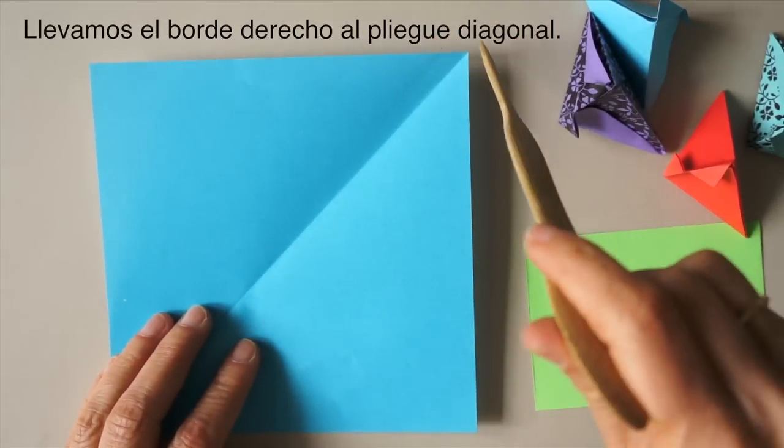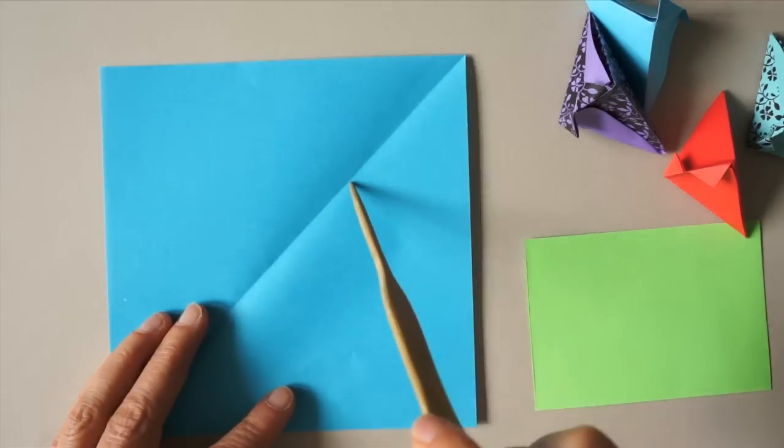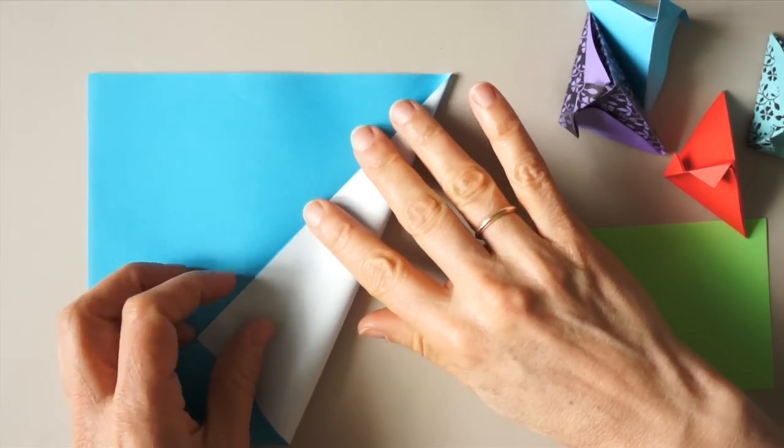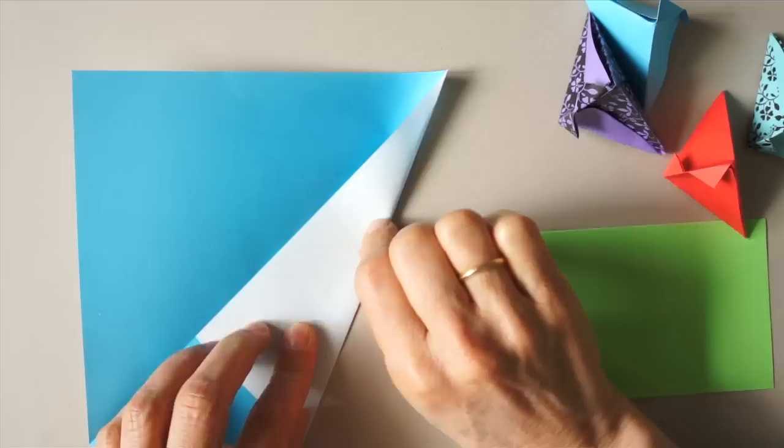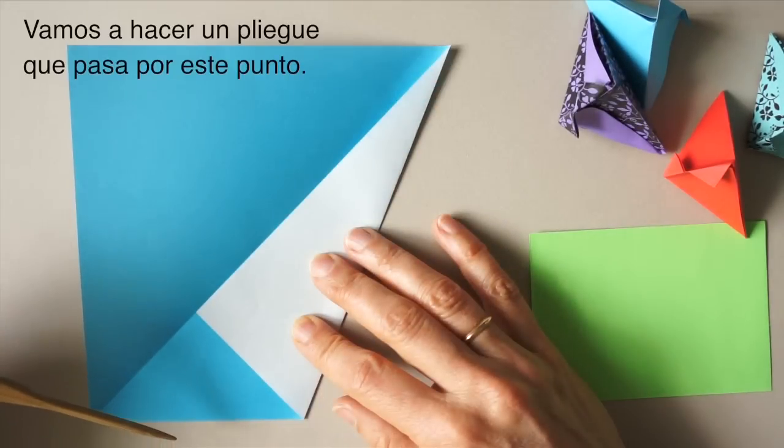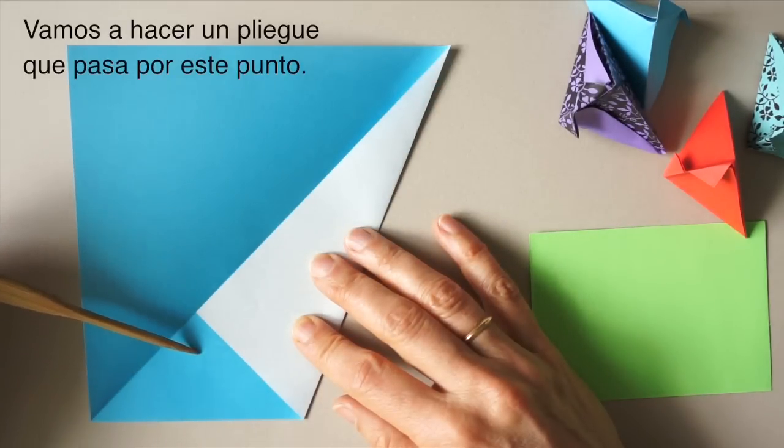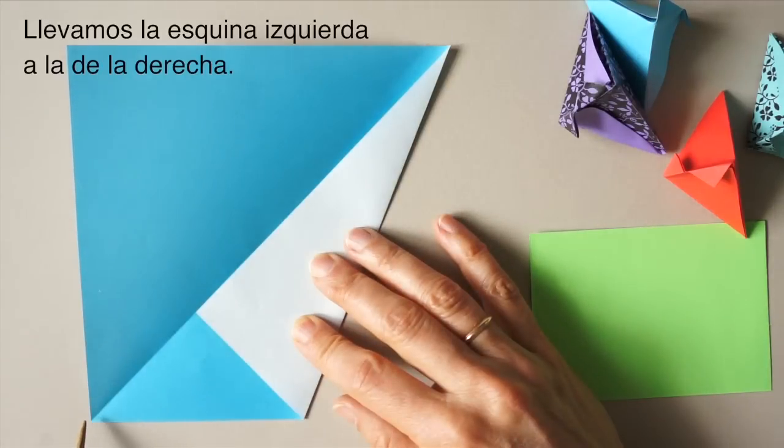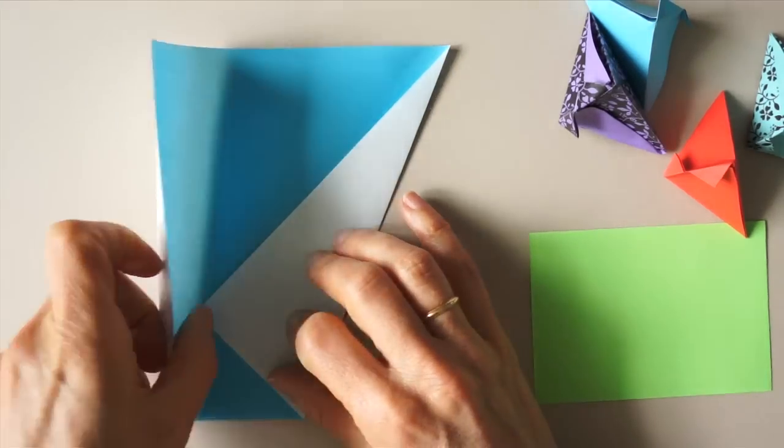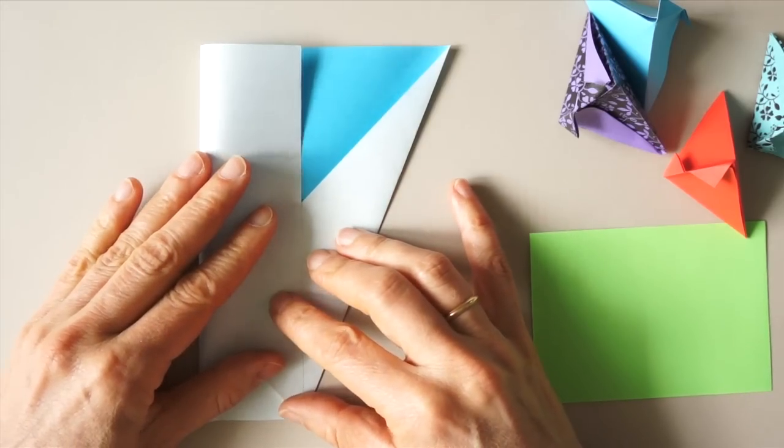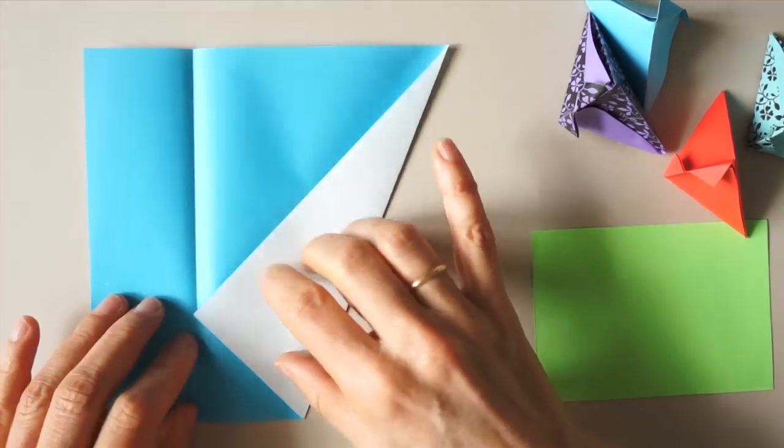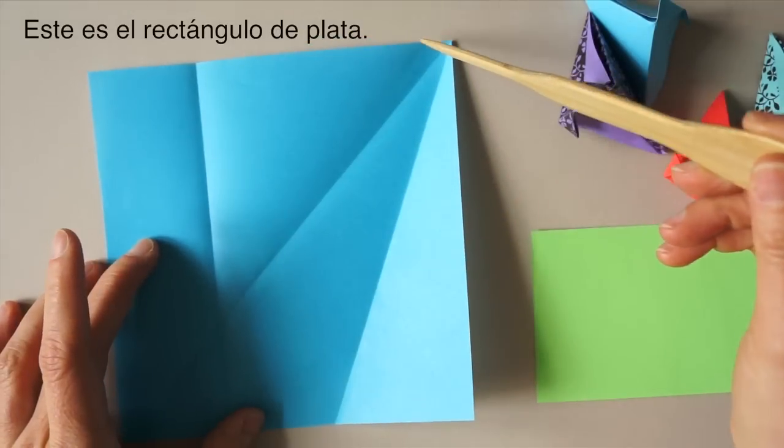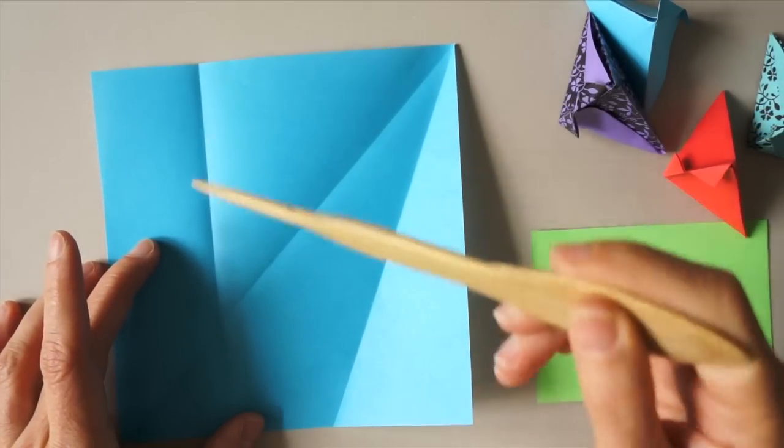Then we are going to bring this edge to align with that diagonal line. We are going to create a fold that goes across here, passing through this point. We are going to bring this point to this point. This rectangle is a silver rectangle, exactly what we need.